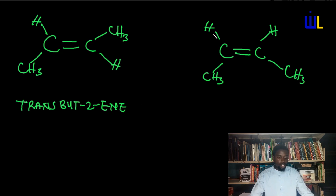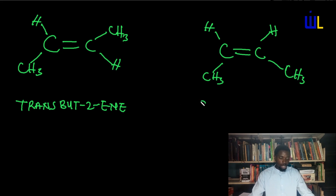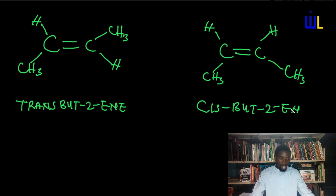In the other arrangement, you have the same species on the same side: hydrogen and hydrogen on one side, methyl and methyl on the other. Because similar species are on the same side of the bond, this is cis-but-2-ene.